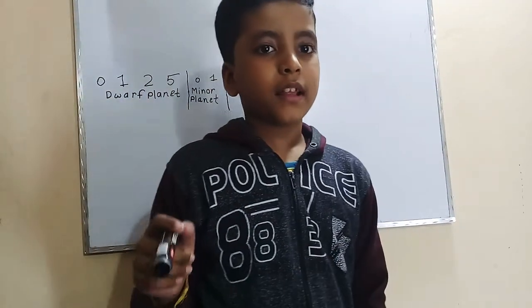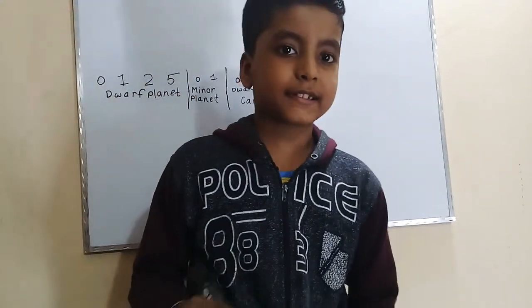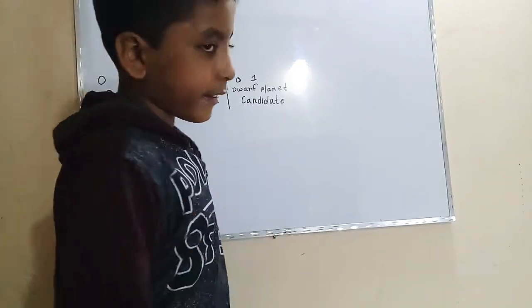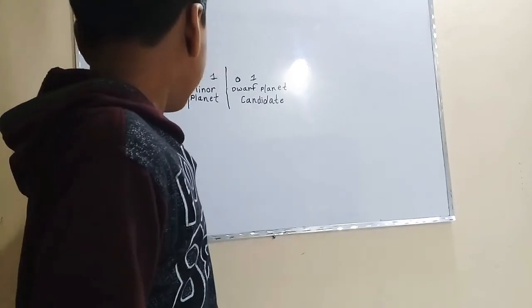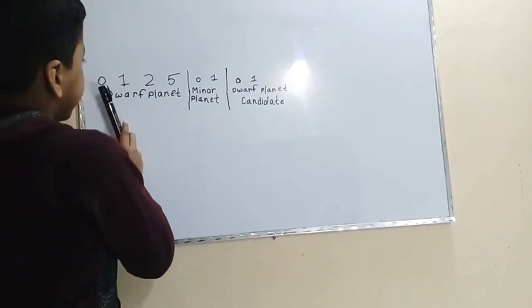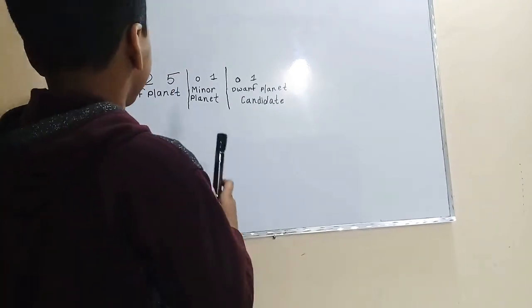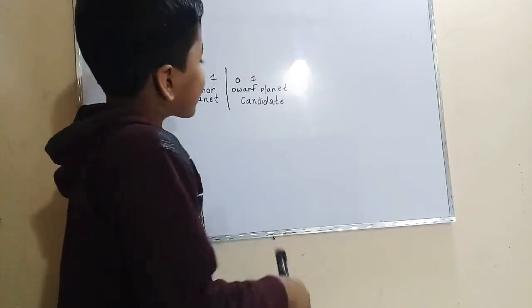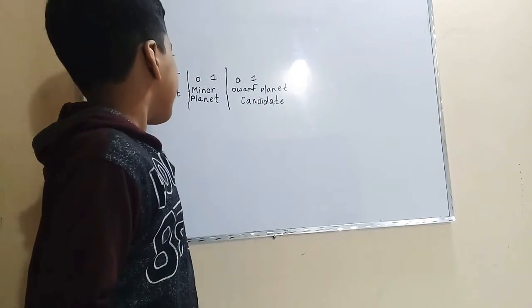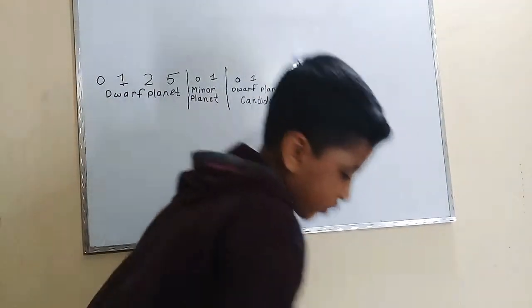In that video, the last type of planet we talked about was major planets. Now in this video we're going to talk about the dwarf planets, minor planets, and dwarf planet candidates. These are the numbers of moons that the dwarf planets have, these are the number of moons that minor planets have, and these are the number of moons that the dwarf planet candidates have.